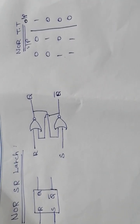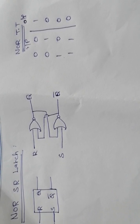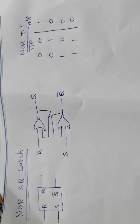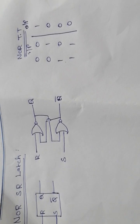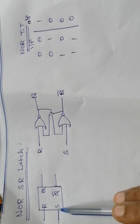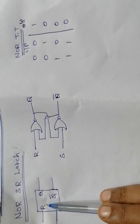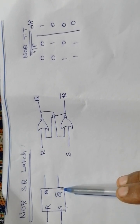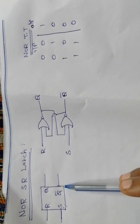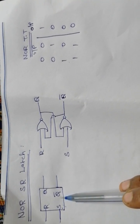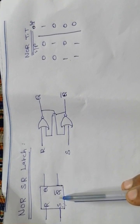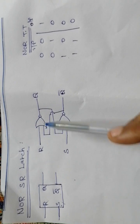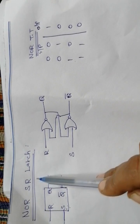Dear students, in this video let's see about the latch — types of latch. The most fundamental type of storage element is a SR latch. SR latch has two inputs: S is called set and R is called reset. It has two outputs which are complemented to each other. This SR latch can be constructed from either two NOR gates or two NAND gates. In this video, we are going to see the SR latch constructed by two NOR gates, which is called the NOR SR latch.